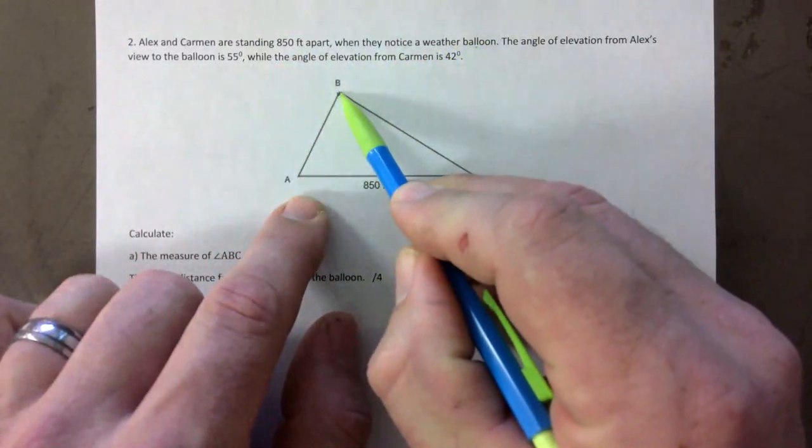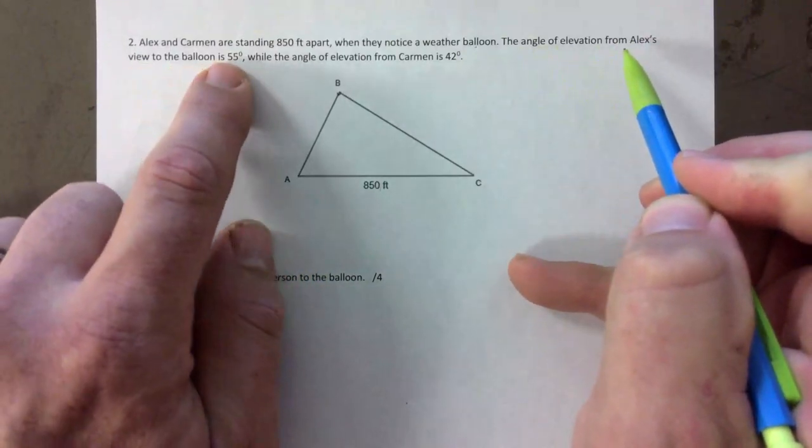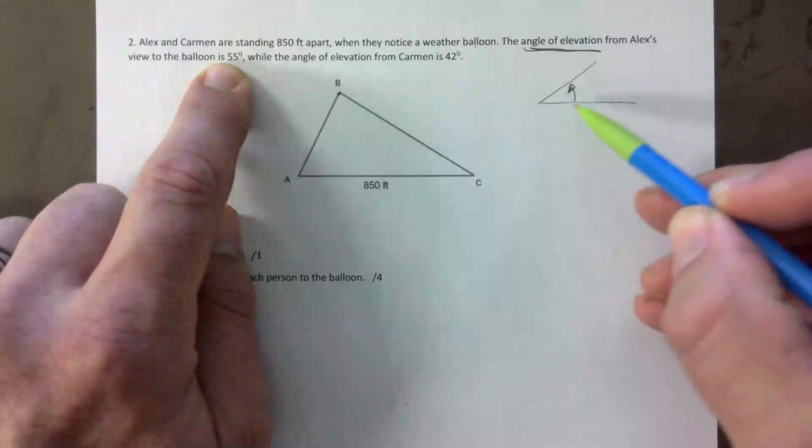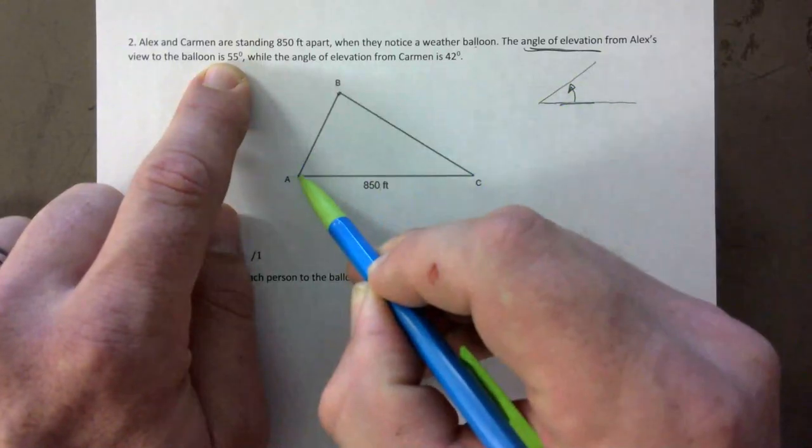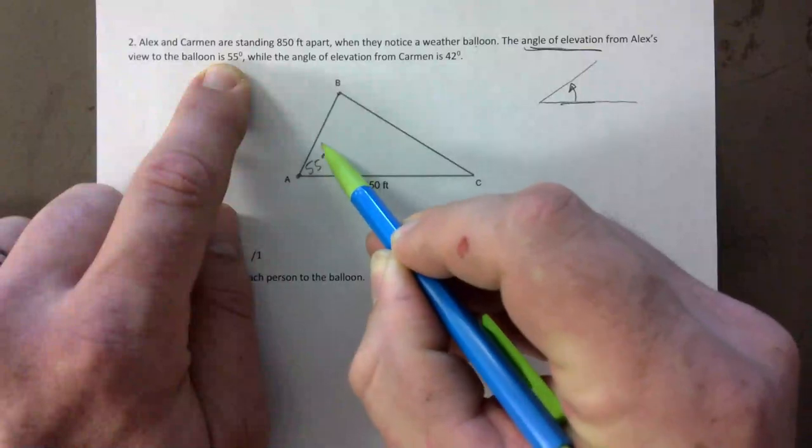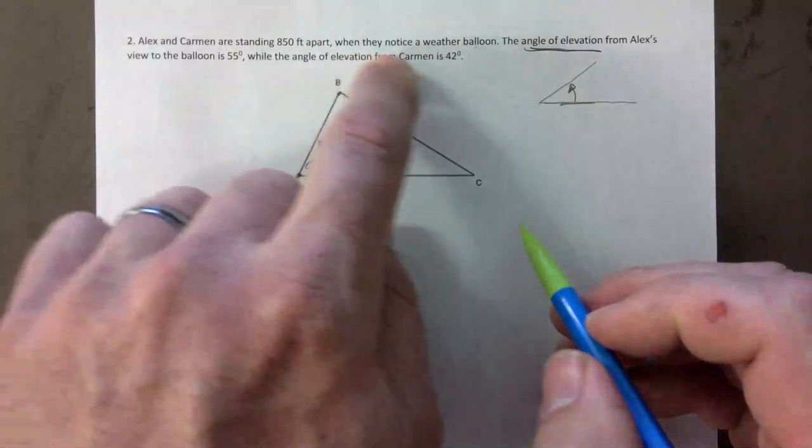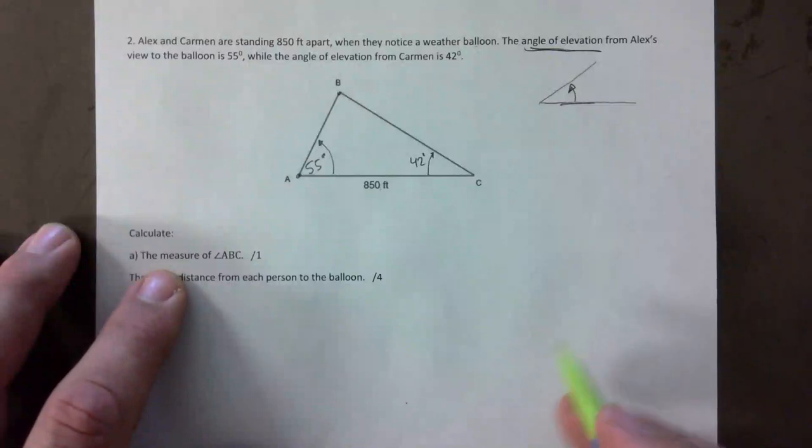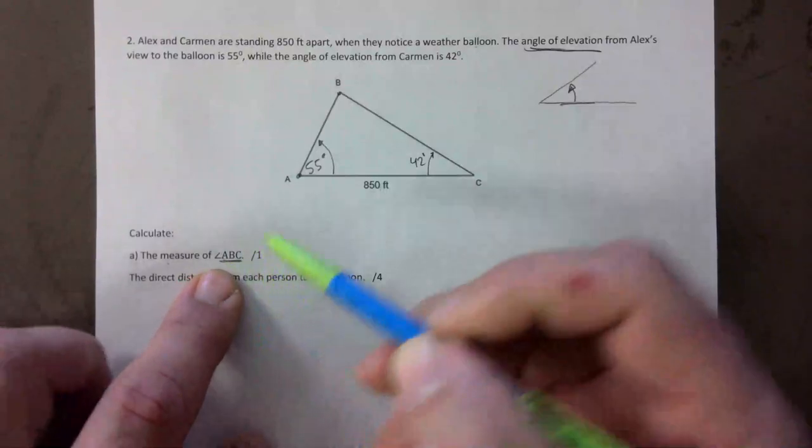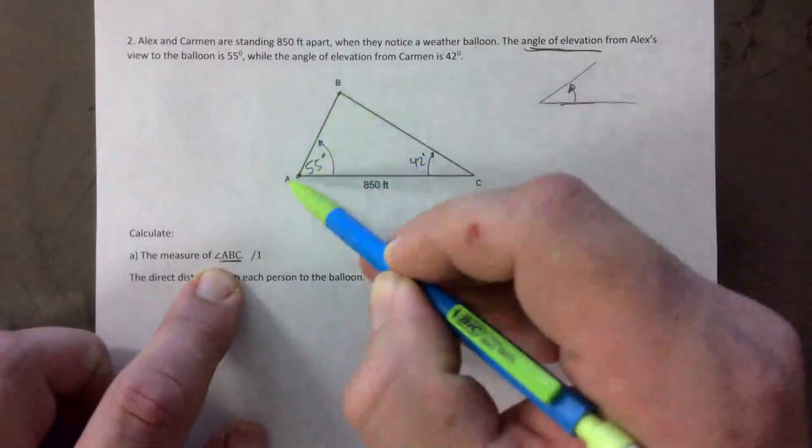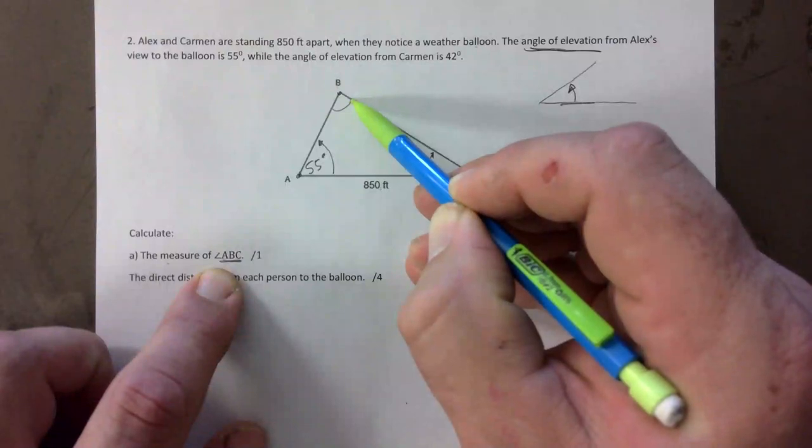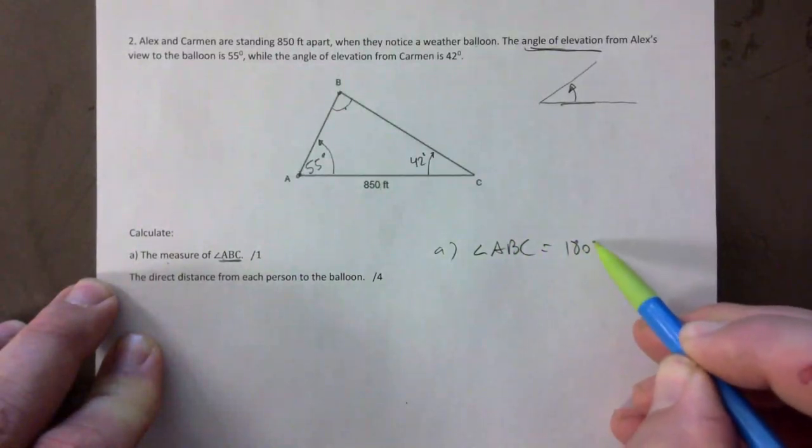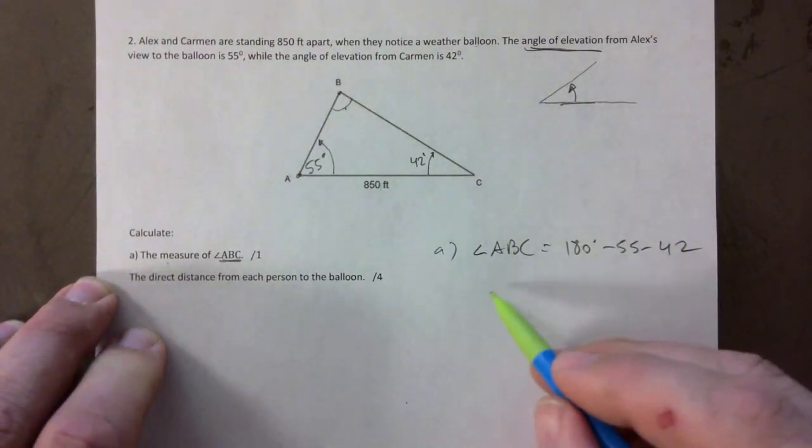When they notice a weather balloon up here, so that's b. The angle of elevation from Alex's view to the balloon is 55. What is an angle of elevation again? It's between the horizontal and a line going up, right. So it literally gets measured from here going up. So if it says Alex here then this is 55 here, it starts from the horizontal goes up to there, right, that's how you measure it. The angle of elevation from Carmen is, right, it's over here so the 42 degree angle goes there. It says a, the measure of angle ABC. What angle is that? ABC, so it's when you make the connections, this is the angle that results from you making connecting those three points. So basically angle b. So angle ABC.